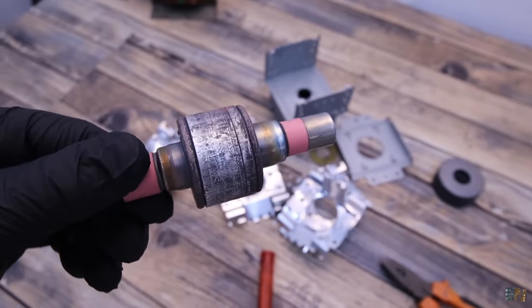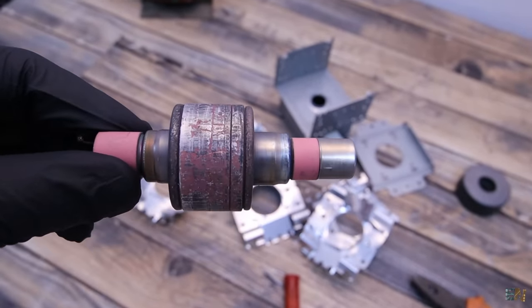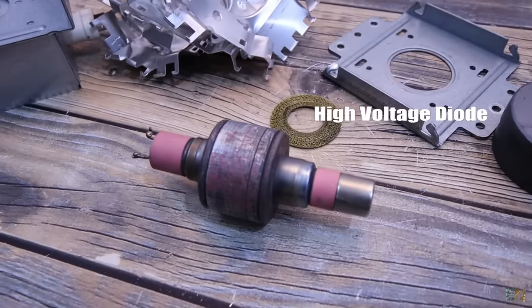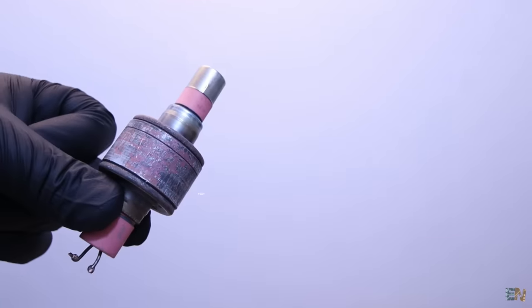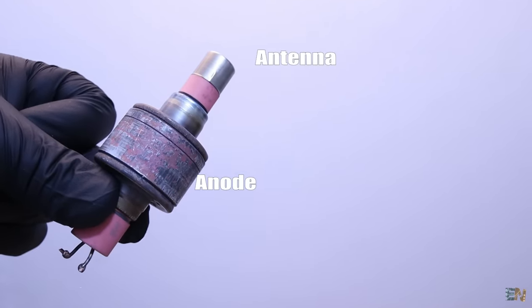So now we have the main tube, made out of copper. Believe it or not, this could be used as a high voltage diode right now. This is the anode, the antenna and the main input terminals.